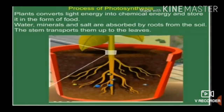Process of Photosynthesis: Plants convert light energy into chemical energy and store it in the form of food. Water, minerals, and salts are absorbed by roots from the soil. The stem transports them up to the leaves.